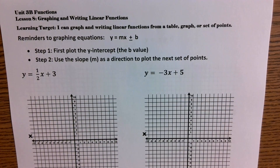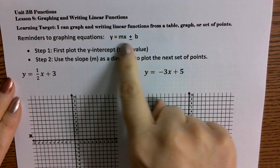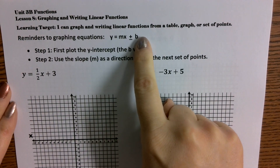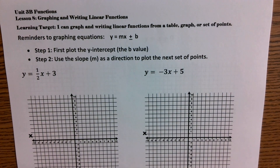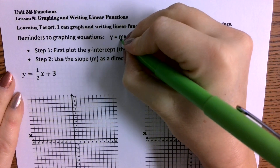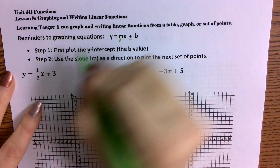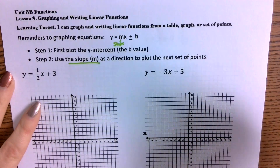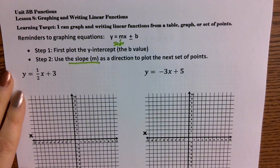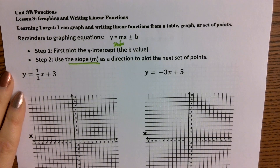You're focusing on graphing equations that are in slope-intercept form — that y equals mx plus or minus b. Remember, m represents the slope. M stands for that slope, and b stands for the y-intercept. So we just want to make sure you remember that. m is going to be our slope, and that b value is our y-intercept.